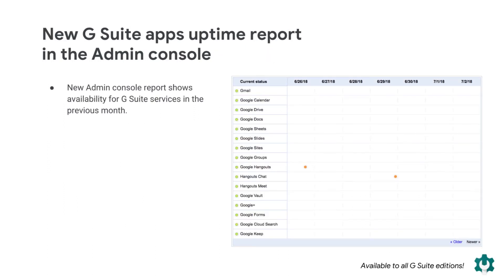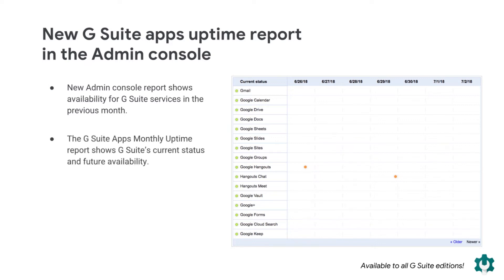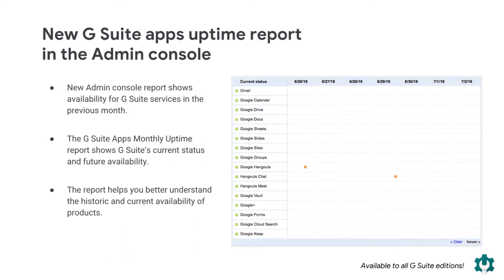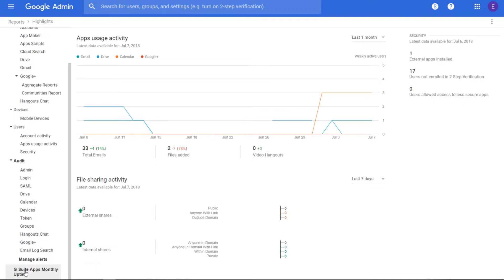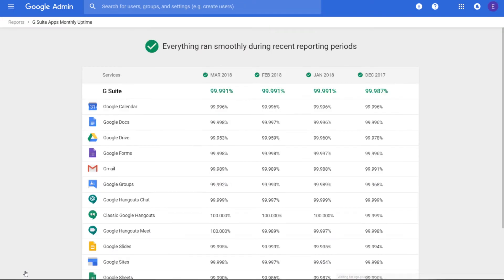We're introducing a new report in the admin console that shows worldwide availability for G Suite services in previous months. The new G Suite apps monthly uptime report adds to the information on G Suite's current status and future availability in the G Suite apps status dashboard. These reports can help you better understand the historic and current availability of products for your users. To view the report in the admin console, go to Reports and then select G Suite apps monthly uptime. Check out our Help Center to learn more.